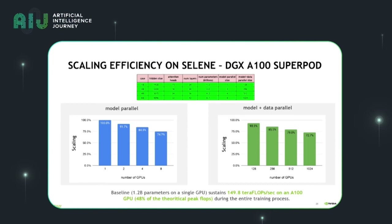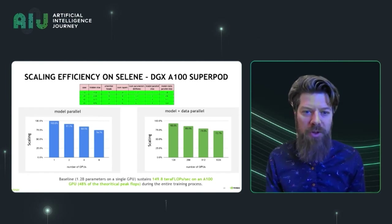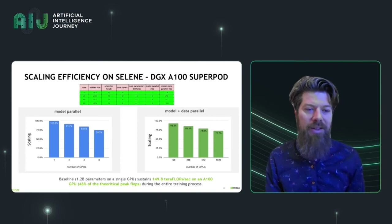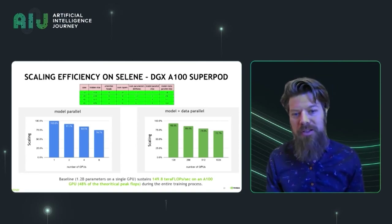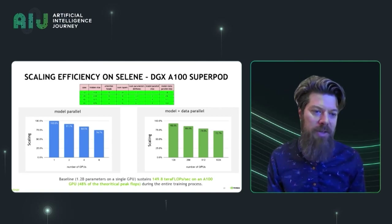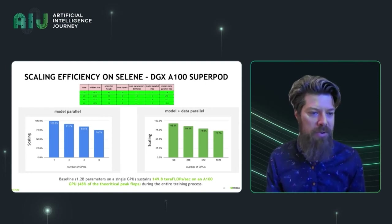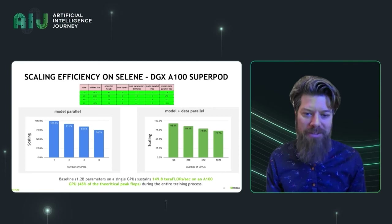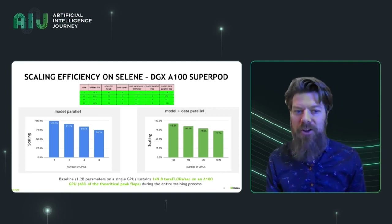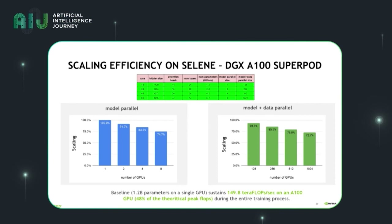That leads to this result where we are scaling very efficiently on large GPU clusters. We've been evaluating our work on the DGX A100 SuperPOD and showing that as we go from small models on a few GPUs to large models on many GPUs, we can still achieve very good scalability. Combining model parallelism as well as standard data parallelism out to 1024 GPUs, we're getting 73% of our single-GPU baseline — which is pretty good, especially given that our single-GPU baseline is sustaining 150 teraflops per second on a single A100 GPU, which is half of the theoretical peak.